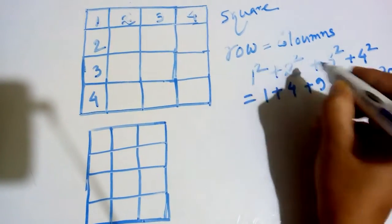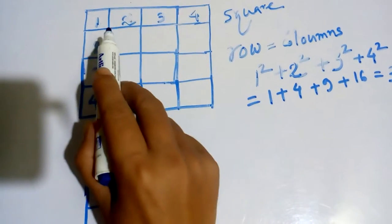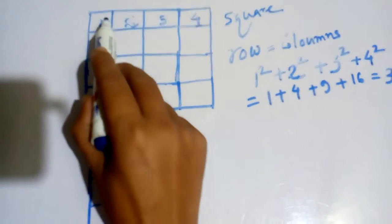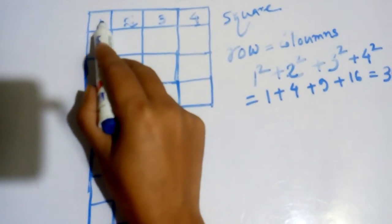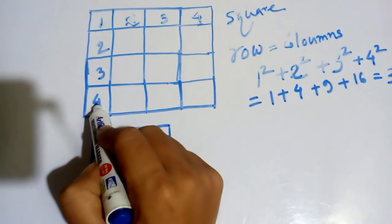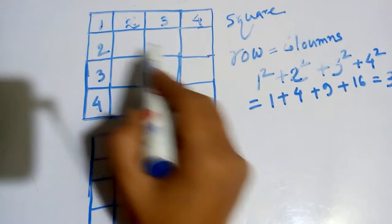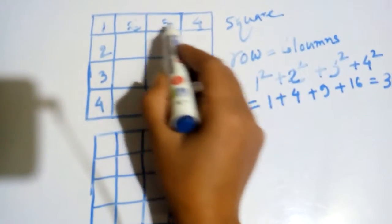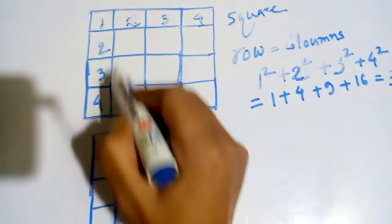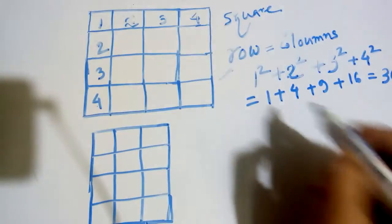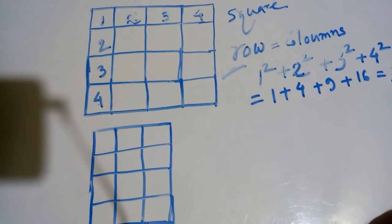So when doing figure counting of a square, when the number of rows equals the number of columns, first mark every cell — cell number one, cell number two, cell number three, cell number four — then apply squaring and adding: 1² + 2² + 3² + 4² = 30. There are a total of 30 squares in the figure.